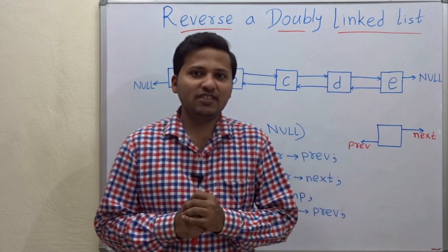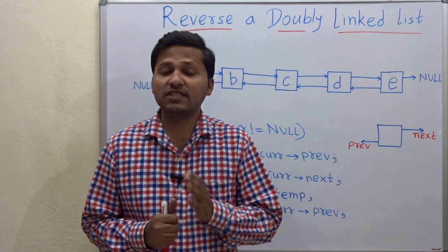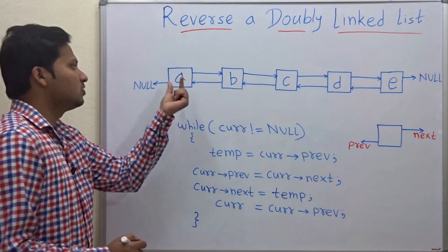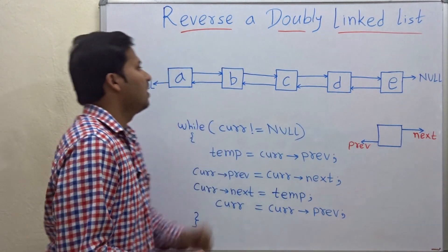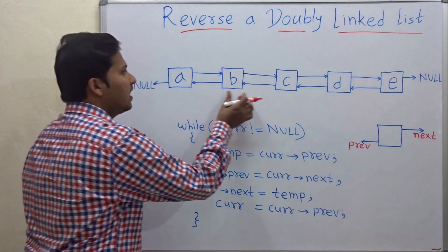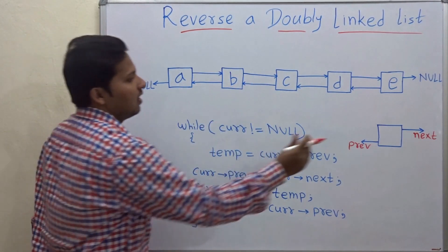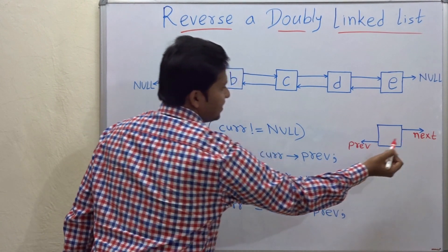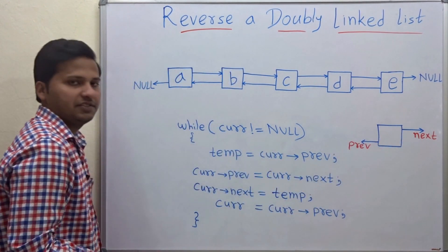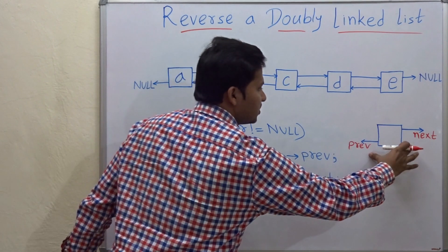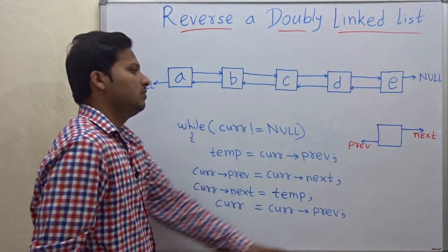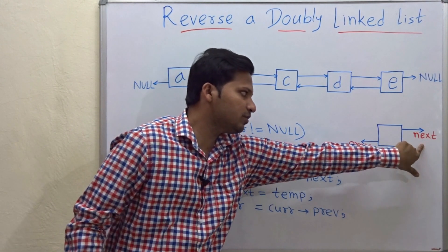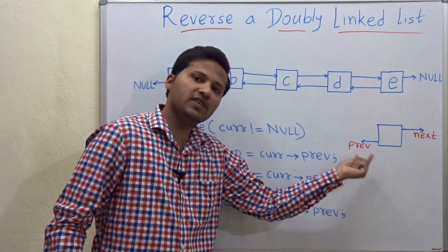Hello friends, today we are going to see how to reverse a doubly linked list. So this is the linked list. Every node in this linked list has two pointers: a next pointer and a previous pointer. This is the structure of the node — the data, the next pointer, and the previous pointer.